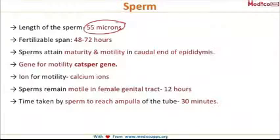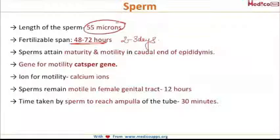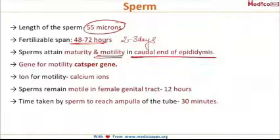Once the sperm is ejaculated into the female genital tract, it is capable of fertilizing an ovum for 48 to 72 hours, that is 2 to 3 days. These sperms attain their motility in the caudal end of the epididymis. Note the word 'motility' — we will later discuss where the sperm attains hyper-motility. The gene involved is the Casper gene, and the ion involved is calcium ions.